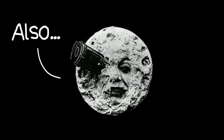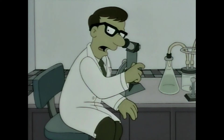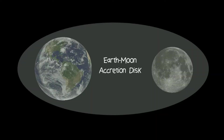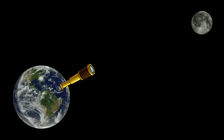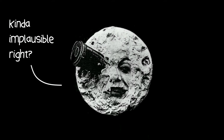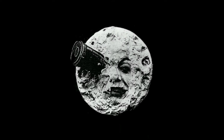It's also worth mentioning that when some papers talk about the Earth-Moon accretion disk, it is centred around a black hole, implying said black hole would have to be positioned somewhere between us and the Moon. There is no black hole between us and the Moon — kind of implausible, right? Well, just wait until you hear the next theory.